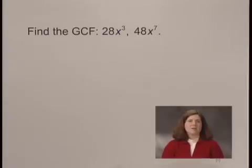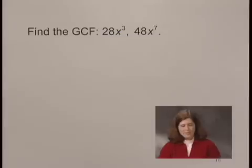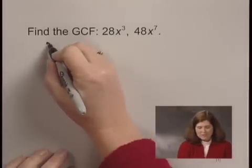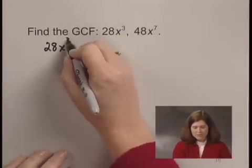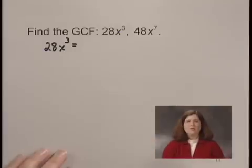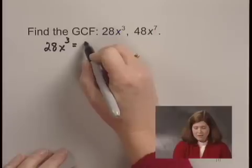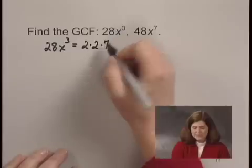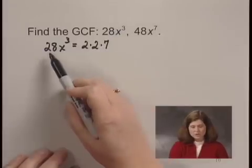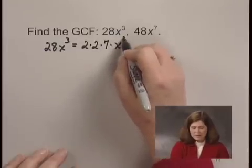In order to find this greatest common factor, we're going to need to factor the 28 and the 48. I can write 28x cubed, finding the prime factorization of 28 as 2 times 2 times 7 — that's 4 times 7, which is 28 — times x cubed.